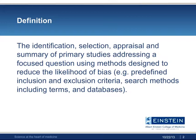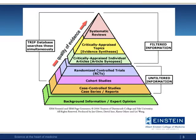As you can see from this definition, a systematic review is a research project, not simply a literature review. This is an example of an evidence pyramid. It shows that the number of studies addressing a topic decreases as the level of evidence increases. A systematic review is the highest level of evidence.